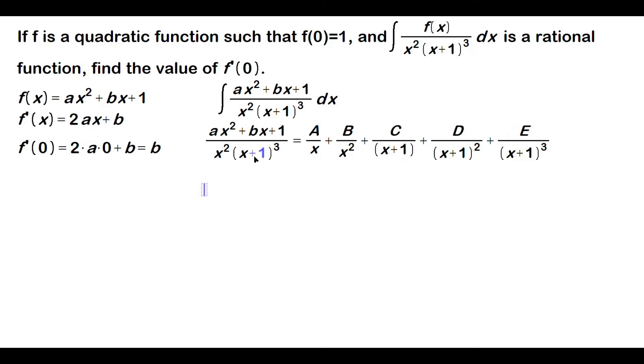Now, multiply through by x squared times x plus 1 quantity cubed. When you do that, you will have ax squared plus bx plus 1. What happens on the right side? You have to be very careful. You're told the integral, once it's done, is a rational function.